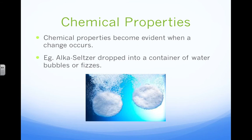Chemical properties become evident when a change occurs. We can determine that a substance has chemical properties based on its interaction — that a change is occurring when it interacts with specific substances. An example of this is Alka-Seltzer: when it's dropped in a container of water, it will bubble or it will fizz, and you can see in the image that it's clearly fizzing and bubbling.